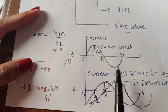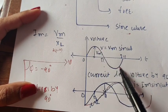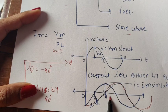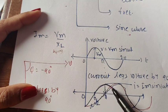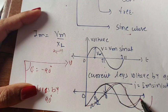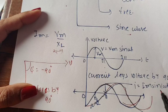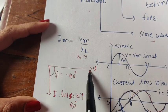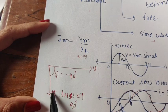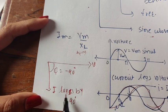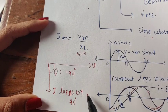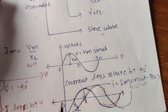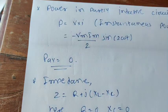The voltage waveform is Vm sin(ωt) with zero phase angle. The current waveform lags behind the voltage by π/2, so I = Im sin(ωt − π/2). In the phasor diagram, the phase angle between voltage and current is −90°, meaning current lags behind voltage by 90°.